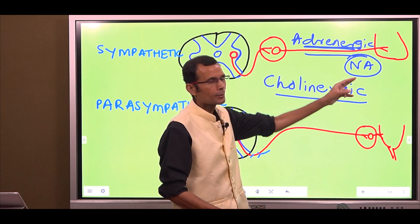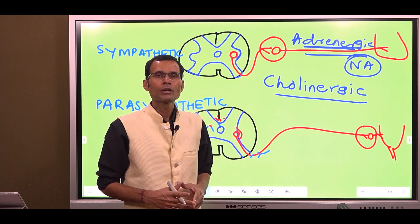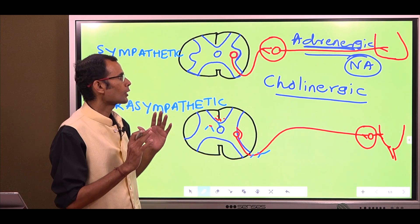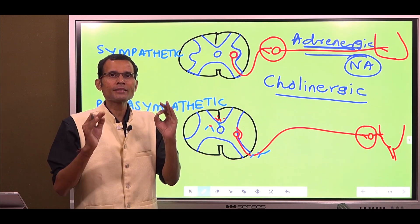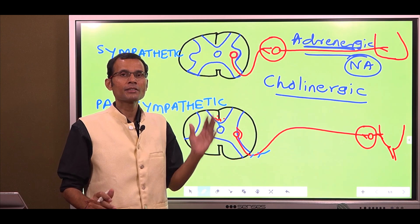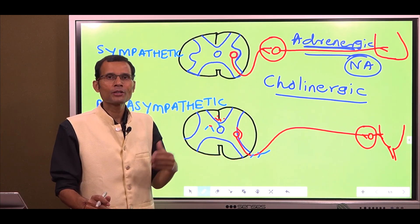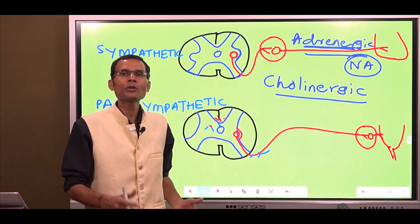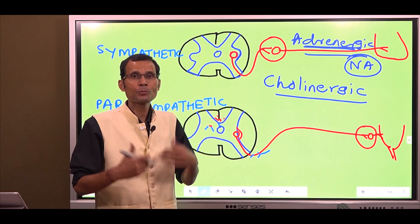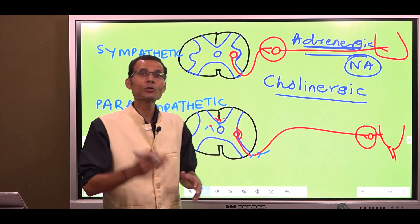Some postganglionic sympathetic fibers do not release noradrenaline — they release acetylcholine. The example here is the sweat glands. Sweat glands are innervated by sympathetic nerve endings, but those sympathetic nerve endings are releasing acetylcholine, not noradrenaline. Many practicing physicians were not aware of this physiologic basis. They would think it is sympathetic innervation and give sympathetic blocking drugs to block catecholamines — block the action of noradrenaline and adrenaline. But no, the nerves going to the sweat glands are sympathetic cholinergic nerves.